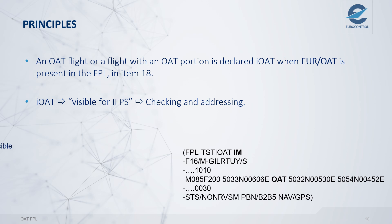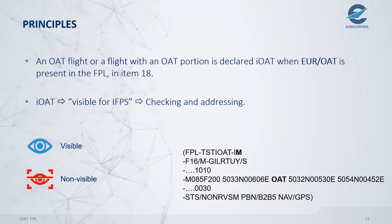This is an example with a mixed flight: GAT followed by OAT. The GAT portion is visible while the OAT portion is invisible. This is shown within the route field. When EUR/OAT is added, the OAT portion becomes IOAT and the entire route becomes visible.